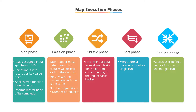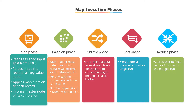The assigned input split is read from HDFS, where a split could be a file block by default. Input is parsed into records as key-value pairs. The map function is applied to each record to return zero or more new records. These intermediate outputs are stored in the local file system as a file.